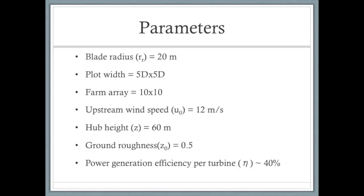I have chosen a number of parameters for my problem, including a blade radius of 20 meters, the plot for each potential turbine to be a square whose length and width are five times the diameter of the blades, a total array for the farm to be 10 by 10 plots, and an upstream wind speed of 12 meters per second.